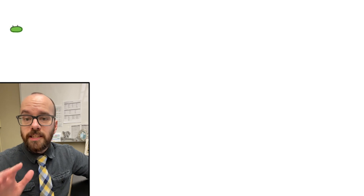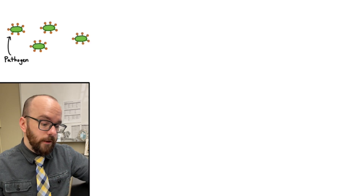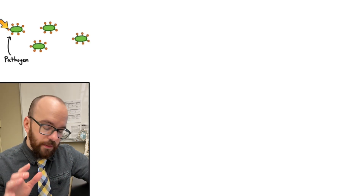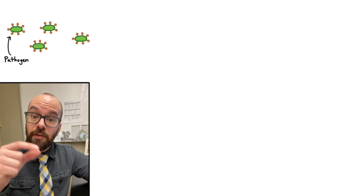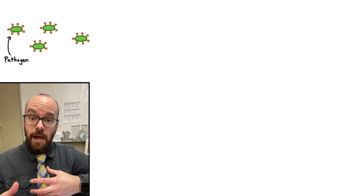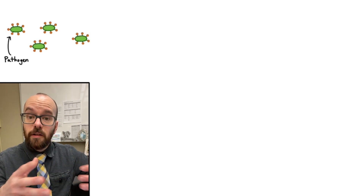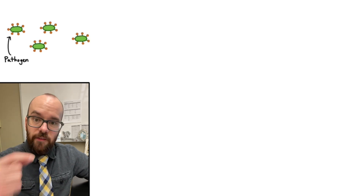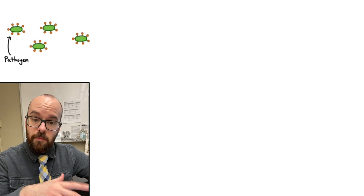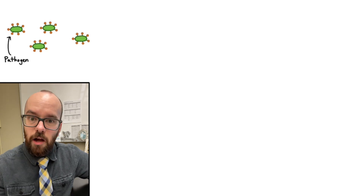Let's say we have a pathogen invading the body — it could be a bacteria or a virus, something in our bodies that shouldn't be there. I've got the pathogens drawn in green, and on the surface of the pathogens I have these little orange circles, which are the antigens. Antigens are little proteins on the surface of the pathogen that we can use to identify it. All bacteria and viruses have different antigens on their surface, so if we can learn to recognize each by its antigens, we can fight off that specific pathogen.